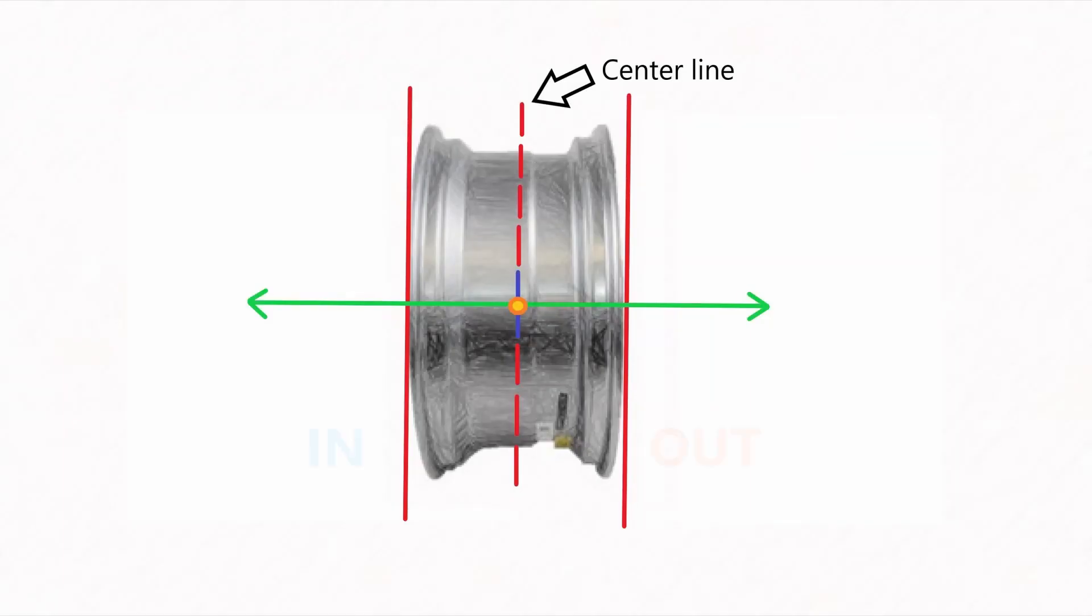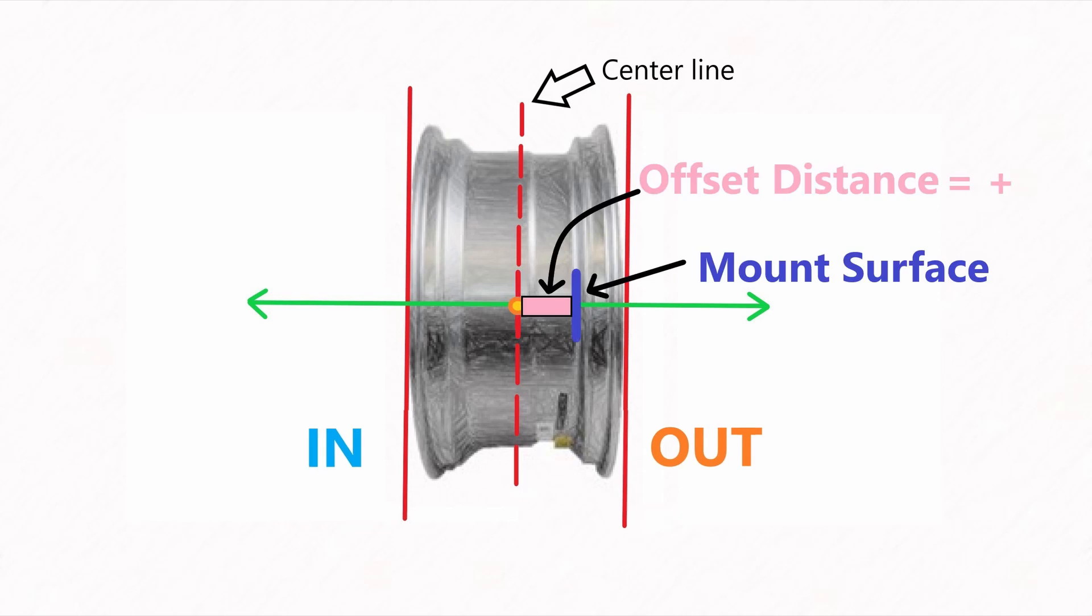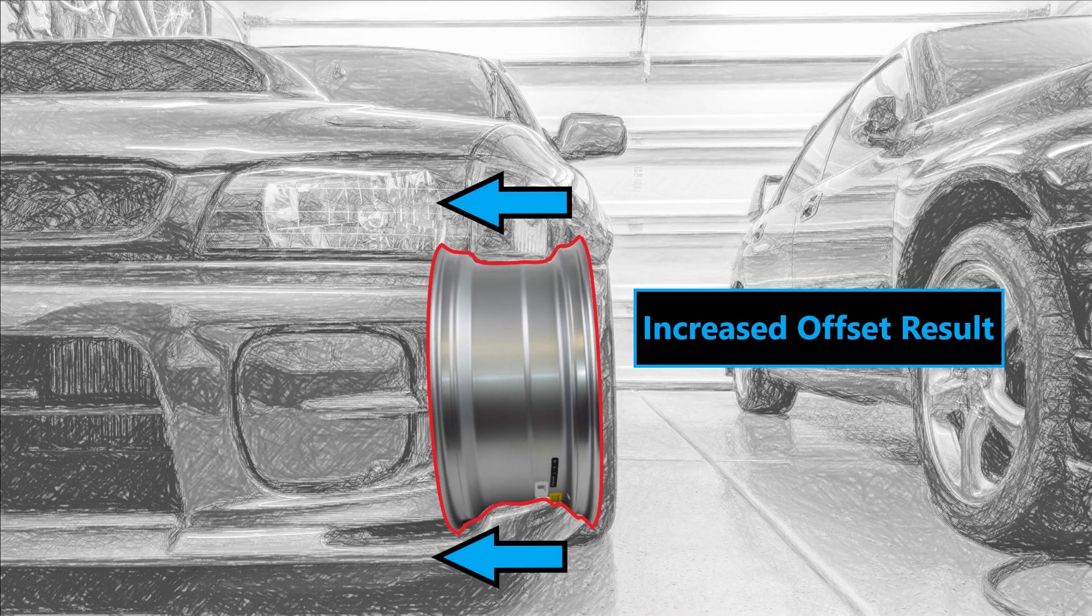Now let me show what zero looks like. Let's look at positive offset. When an offset has a positive value, that means I'm increasing the distance from the centerline to the out direction. So my mating surface is now here, closer to the outside of the wheel.